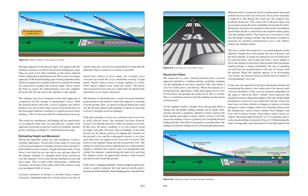A round-out started excessively high must be executed more slowly than one from a lower height to allow the airplane to descend to the ground while the proper landing attitude is being established. The rate of rounding out must also be proportionate to the rate of closure with the ground. When the airplane appears to be descending very slowly, the increase in pitch attitude must be made at a correspondingly slow rate. Visual cues are important in flaring at the proper altitude and maintaining the wheels a few inches above the runway until eventual touchdown.